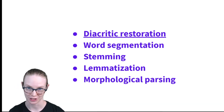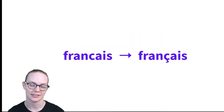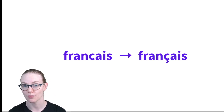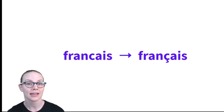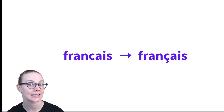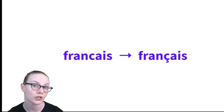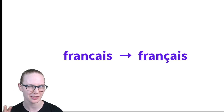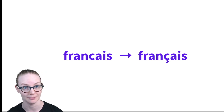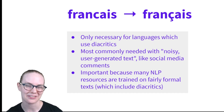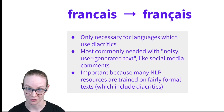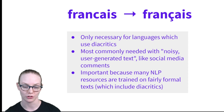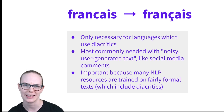Let's start with diacritic restoration. Diacritic restoration is taking a text string that the diacritics have been removed from and placing them back in. Diacritics are things like accent marks in French or Portuguese, or tone marks in some African languages, where they're a little bit optional in informal writing.